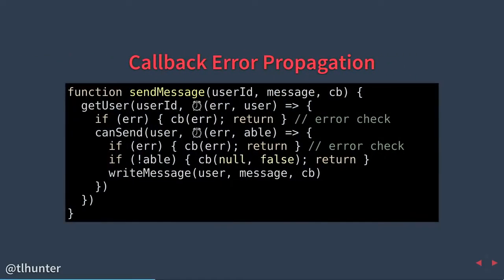With error propagation, every time we have an error we want to be able to handle it. Within our getUser, if an error happens, we call the callback. Within canSend, if there's an error, we call the callback. This is a pretty common pattern — the simplest way you can handle errors. Depending on your failure cases, maybe a failure isn't too bad at some points, but this is the simplest way to do error handling.